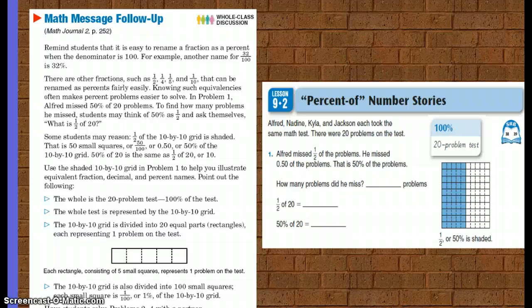Some students, or some of you, may reason that half of the 10 by 10 grid is shaded. That is 50 small squares, or 50 out of 100, or 0.50, or 50 percent of the 10 by 10 grid. So 50 percent of 20 is the same as half of 20, which we said was 10.